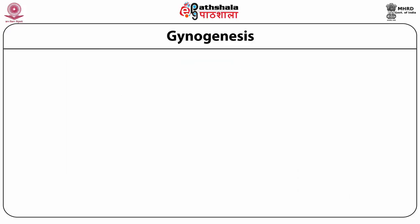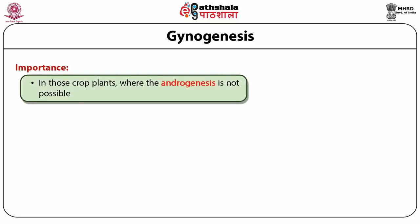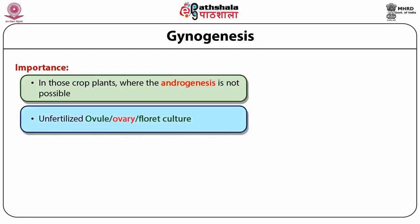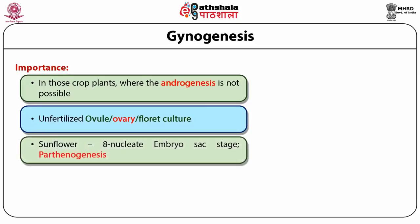Gynogenesis becomes very important in those crop plants where androgenesis is not possible or is fraught with problems. Gynogenesis is achieved by culturing unfertilized ovules, ovaries, or even the florets — a piece of inflorescence — under aseptic conditions. The stage at which you culture the ovules is generally the 8-nucleate stage.